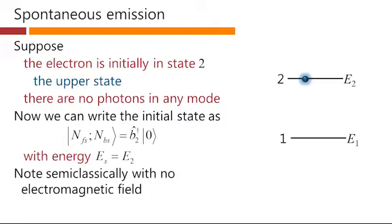Now, note that semi-classically, with no electromagnetic field applied, nothing will happen to this electron. There would be no transitions in our previous simpler classical electromagnetic models applied using perturbation theory. But now we're going to do this properly using a quantum mechanical version of our electromagnetic field. And we're going to see what happens.